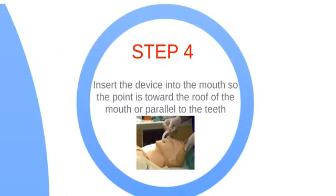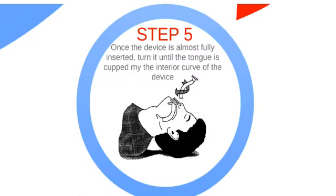Step 4: insert the device into the mouth so that the point is toward the roof of the mouth and parallel to the teeth. Step 5: once the device is almost fully inserted, turn it until the tongue is cupped by the interior curve of the device.